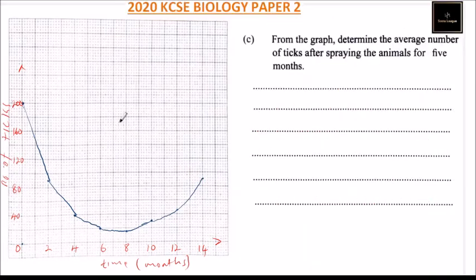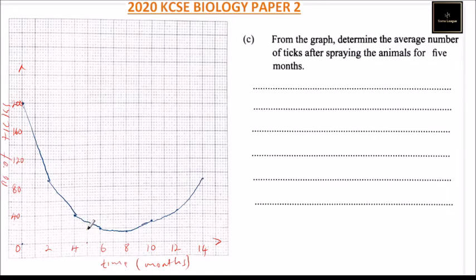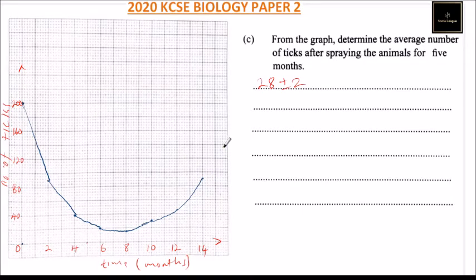Part C asks: from the graph, determine the average number of ticks after spraying for five months. Reading from the graph at five months, the value is approximately 28 (plus or minus 2). You get a mark for correctly interpreting the value from the graph.